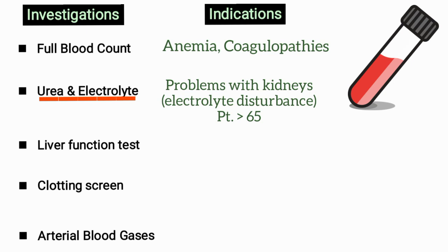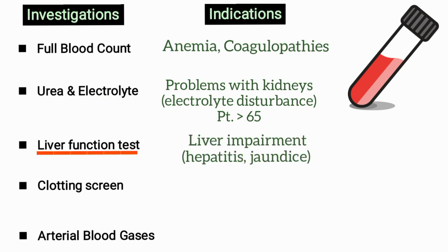A urea and electrolyte test is done to detect any problems with the kidneys so proper IV management can be given during and after surgery. It is normally required in all patients over 65. A liver function test is ordered if there is suspicion of liver impairment, such as in hepatitis or jaundice.